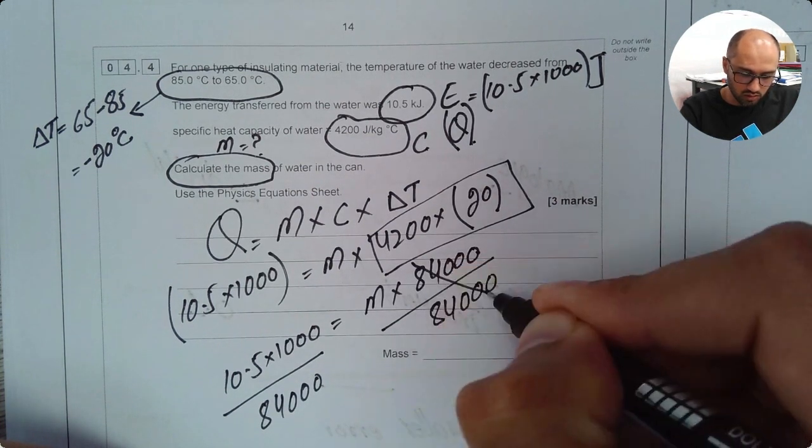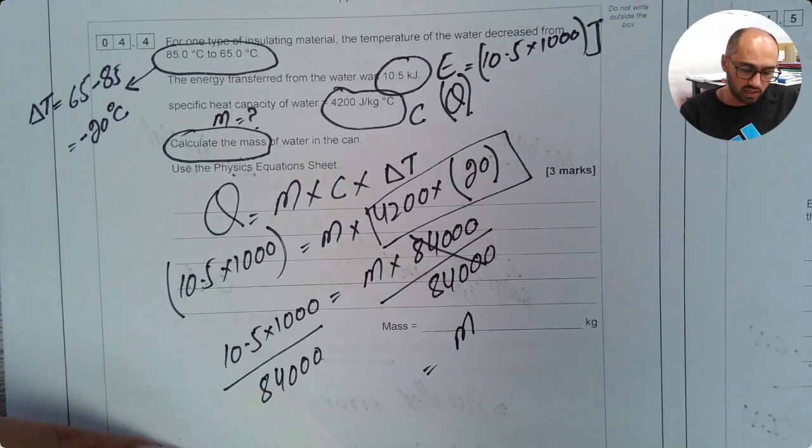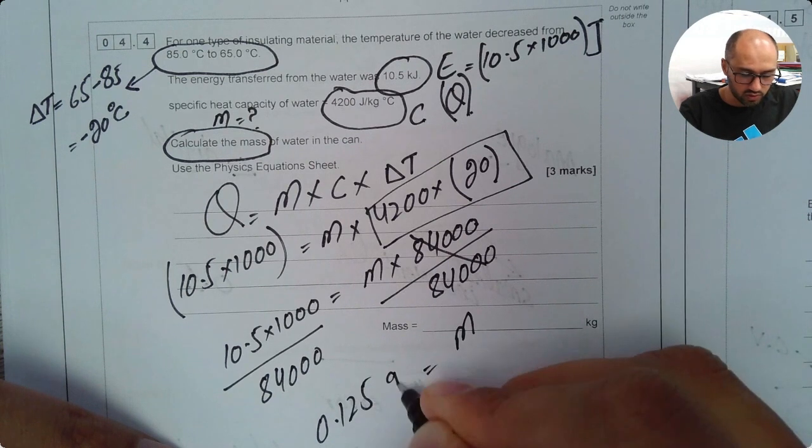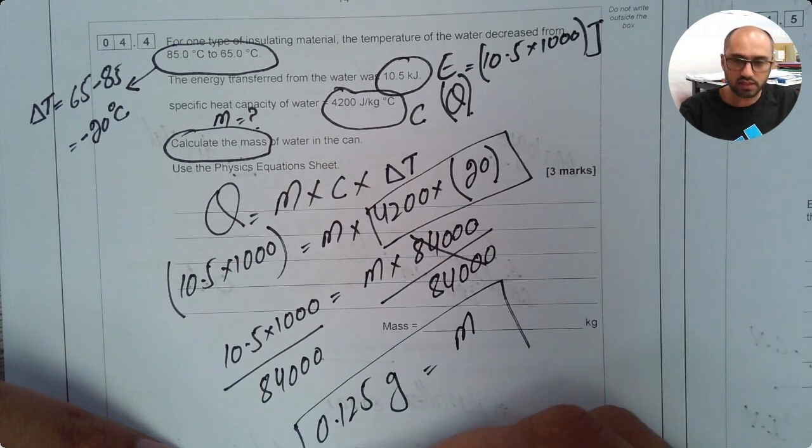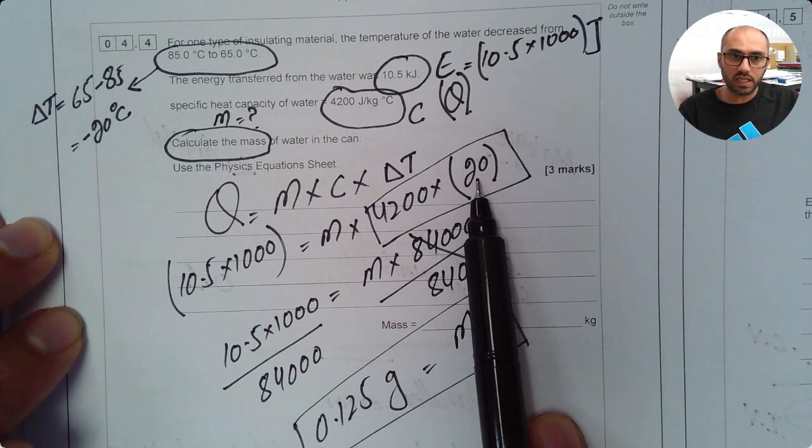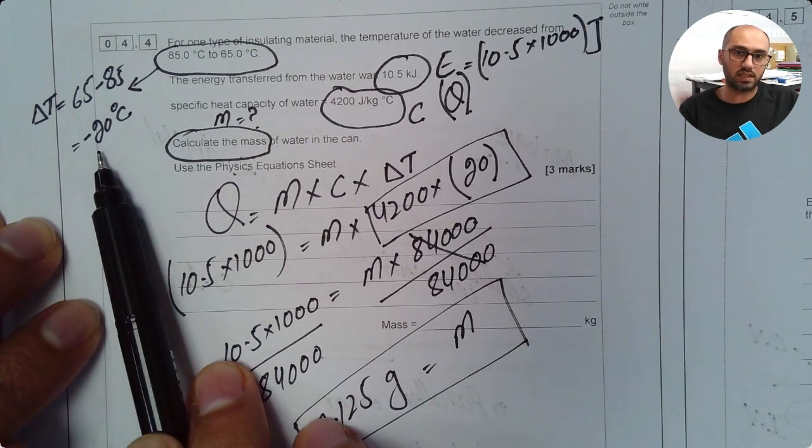This is gone and left with M only on the right side. If you plug these values in your calculator you'll end up with 0.125 grams and this is my answer. Now you might be thinking here it was minus 20 and I've used a value of 20 here. This is just to show that this was a decrease in temperature.